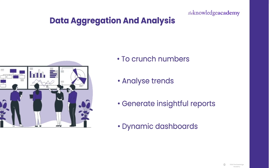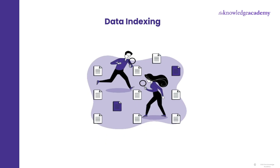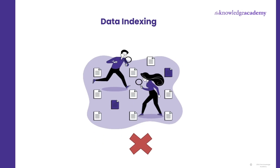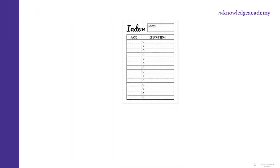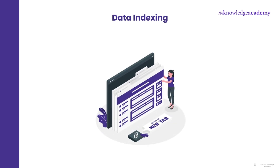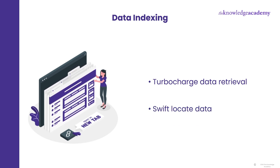Another very important advantage is data indexing. Remember in school days how we used to make an index on the front page with page numbers showing where each chapter starts and ends? That made it easier to find a desired chapter quickly. Just like that, in databases, data indexing is done on tables — by this you can turbocharge data retrieval. SQL's indexing magic helps the database engine swiftly locate the rows you're looking for.